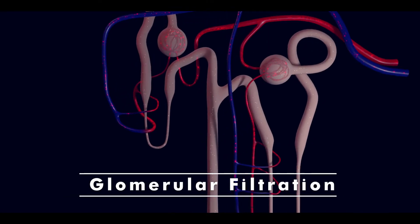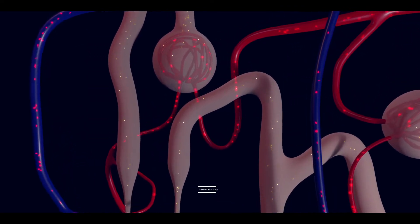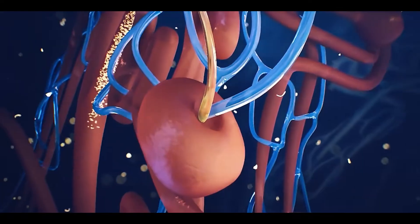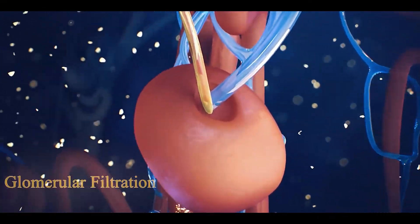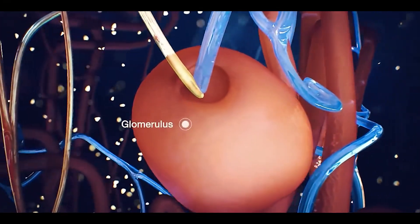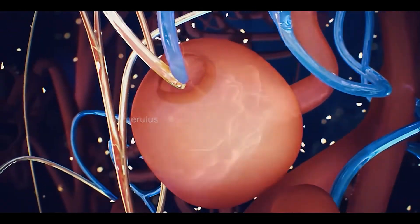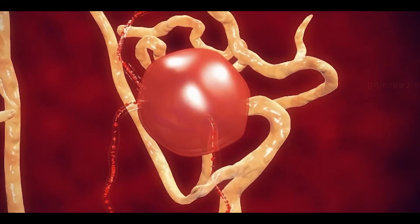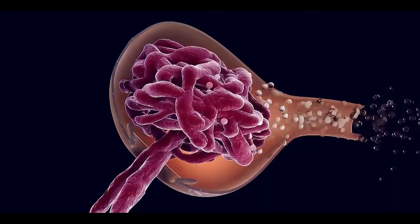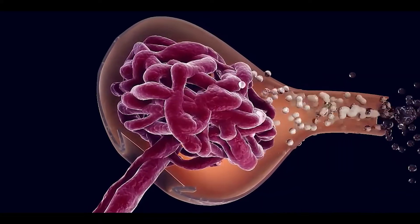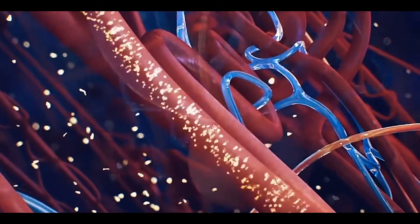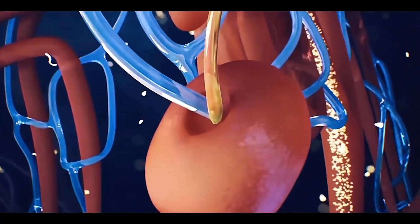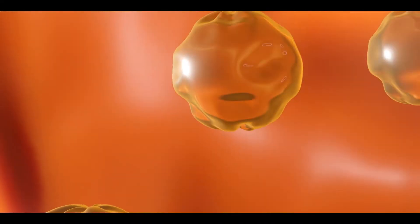glomerular filtration, tubular reabsorption, and tubular secretion. In glomerular filtration, blood enters the nephron at the glomerulus, where increased blood pressure causes extra water and solutes to filter into the Bowman's capsule and enter the nephron tubules. The glomerular membrane has small pores that prevent movement of large proteins such as albumin from blood into the nephron.